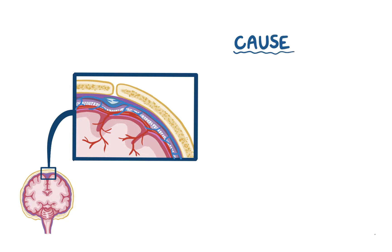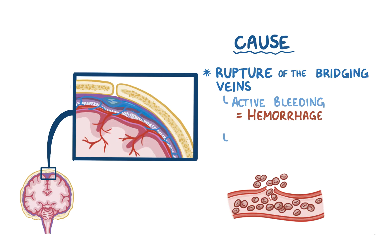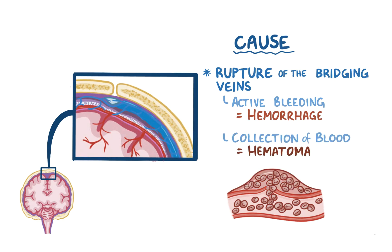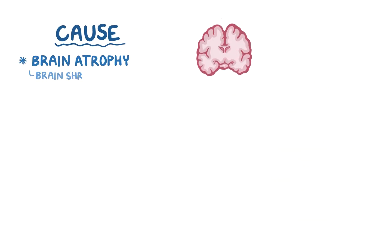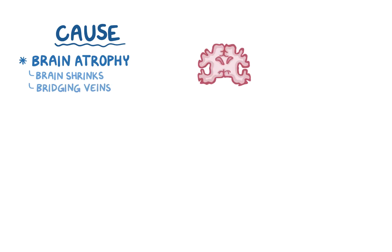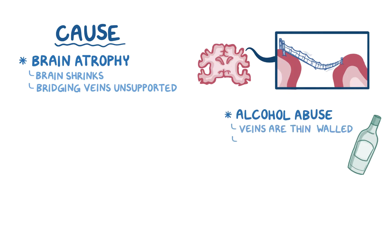The main cause of a subdural hemorrhage is a rupture of the bridging veins located in the subdural space. When a blood vessel is damaged and there's active bleeding, it's called a hemorrhage, and the collection of blood that results is called a hematoma. Some people, like the elderly, often have brain atrophy where their brain shrinks in size, meaning the bridging veins are stretched across a wider space where they are largely unsupported — kind of like a rickety bridge across a mountain pass. In infants and individuals that abuse alcohol, the veins are thin-walled and therefore more likely to break.